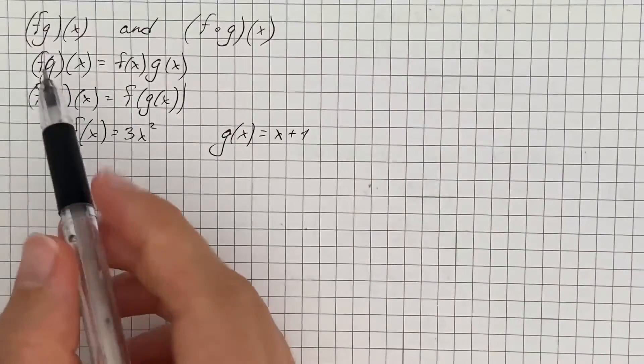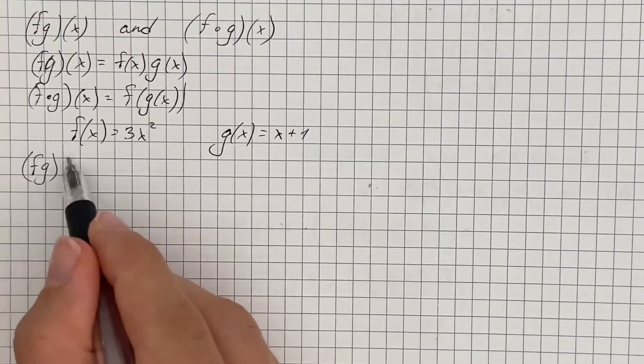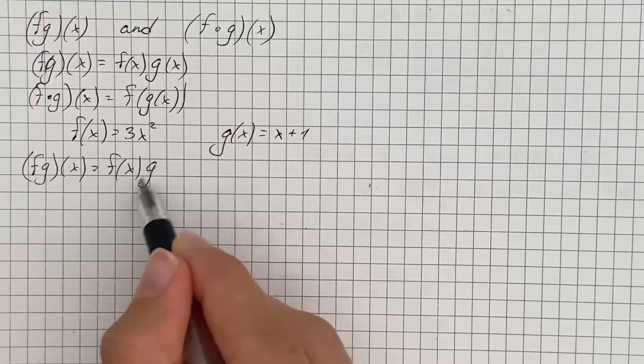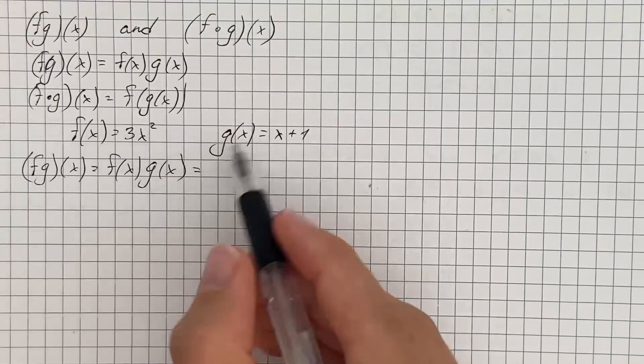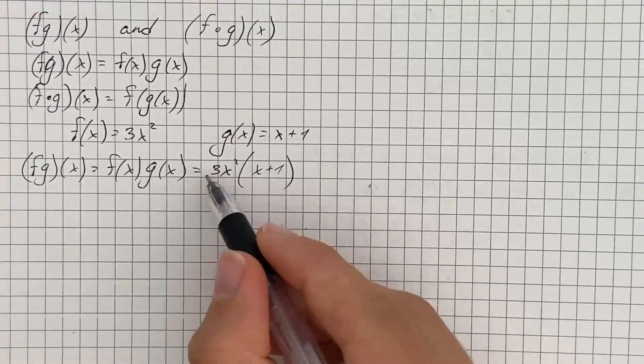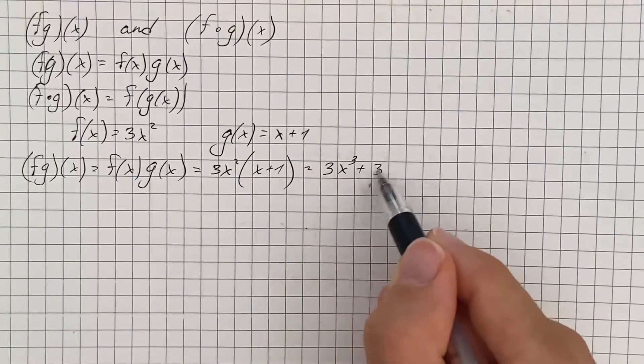So for the first formula, which is f times g, we can write this as f times g. We simply multiply 3x squared by x plus 1, and if we simplify, we distribute and we get 3x cubed plus 3x squared.